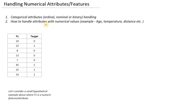Let's consider a small numerical example for demonstration. In this example, the feature F1 is the numerical attribute we are talking about. If you look at the values in column F1, all are continuous in nature. The target column has only two values, 0 and 1, making this a binary classification problem. We will see how we can apply information gain on such type of data.